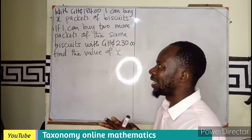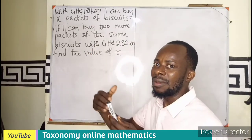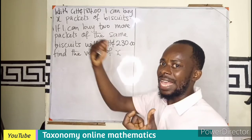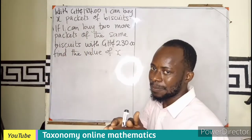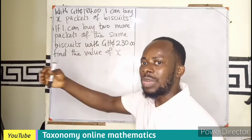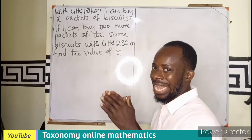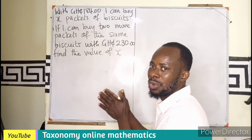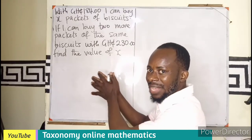Then if I am buying two extra, meaning imagine the first packet was three. If I am buying two extra, it will be three plus two, making five. So it means I have to add the extra two to that of the first one that I bought. So that gives us another ratio. 230 Ghana cedis is to X plus 2.